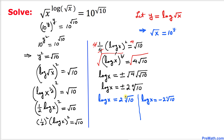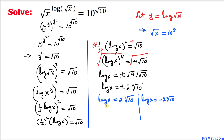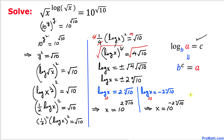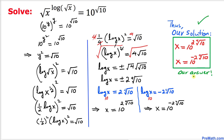So we split into two cases with positive and negative signs. The base for these logs is missing — by default the base is 10. Using the rule to convert logarithmic form to exponential form: x equals 10 power 2 times the fourth root of 10, and x equals 10 power negative 2 times the fourth root of 10. These are our two solutions and that's our final answer. Thanks for watching and please don't forget to subscribe to my channel for more exciting videos.